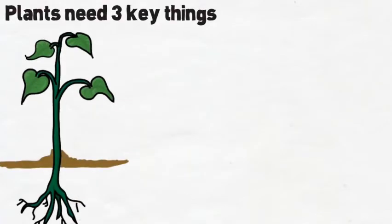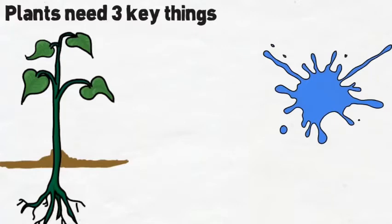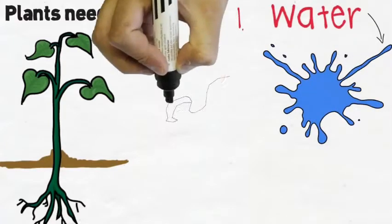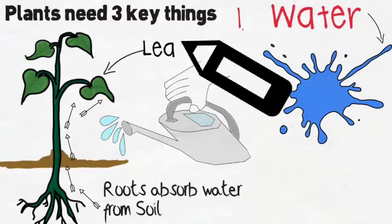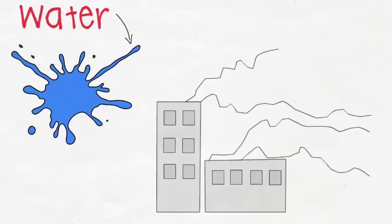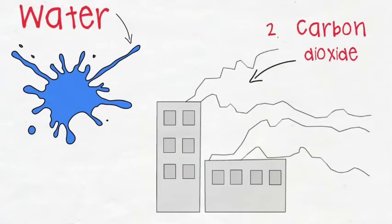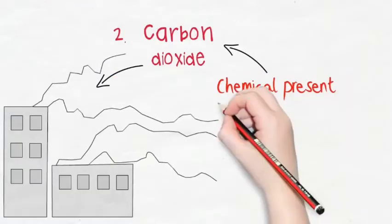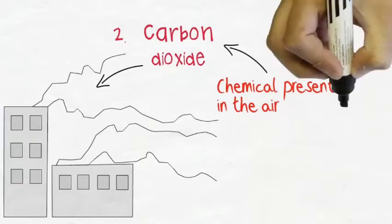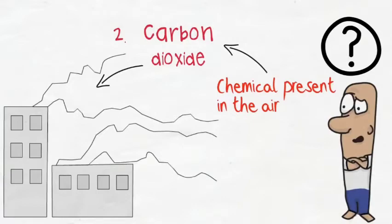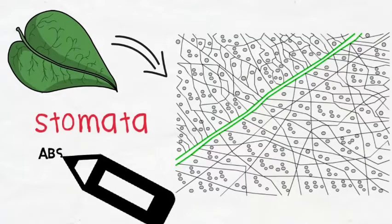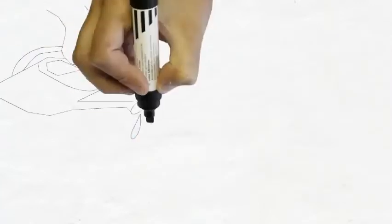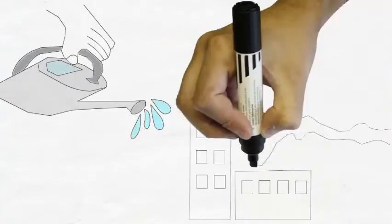Plants need three things to make food. The first is water. When you water a plant, its roots absorb water from the soil. The water is then passed onto the stem, which in turn passes it onto the leaves of the plant. The second thing plants need to make their food is carbon dioxide. Plants have small openings on their leaves called stomata. Carbon dioxide is absorbed through these small openings.